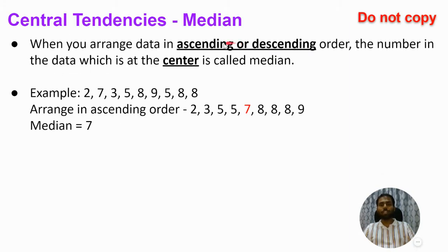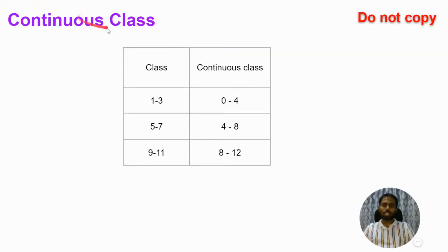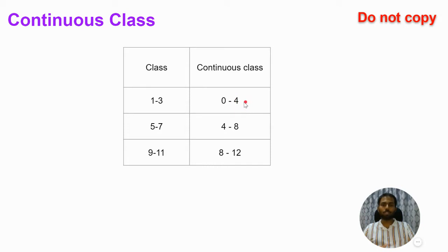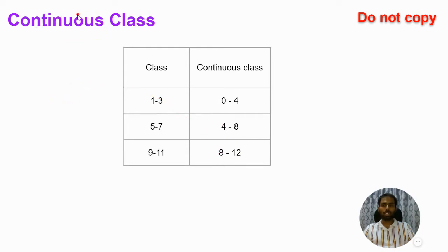Before going to the steps for finding median, you need to know what a continuous class is. For example, classes like 1–2, 3–7, 9–11 are not continuous because four is missing between three and five, and eight is missing between seven and nine. Whereas if the upper limit of one class equals the lower limit of the next — ending at 4 and starting at 4, ending at 8 and starting at 8 — that is known as a continuous class.